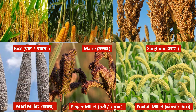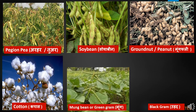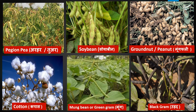Many important crops are grown under Kharif season, such as rice, paddy, maize, sorghum, pearl millet, finger millet and foxtail millet. Other major Kharif crops include pigeon pea, soybean, groundnut, cotton, moong bean and black gram.